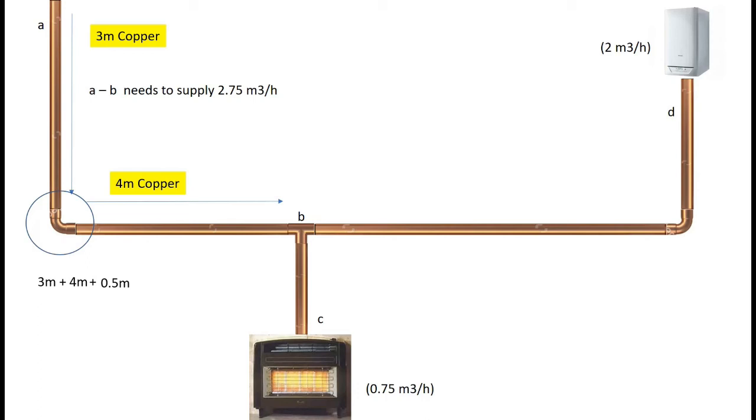On this, we've got A to B, 3 meters plus 4 meters plus 0.5 of a meter, and that equals 7.5 meters. That's the length of pipe work that we need to pass the gas through.